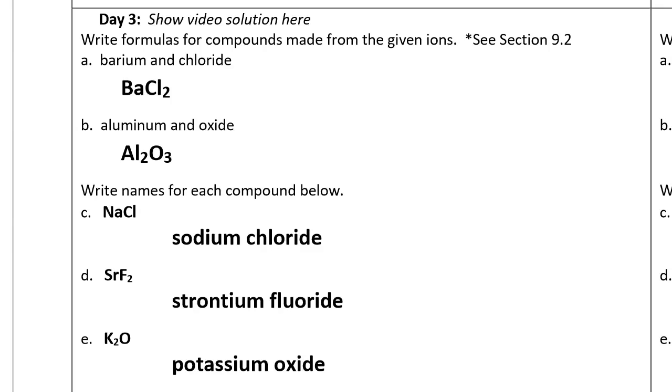Here is the answer for the Day 3 bell work. Write formulas for compounds made from the given ions. Question A, from barium and chloride. The symbol for barium is Ba. The symbol for chloride is Cl.